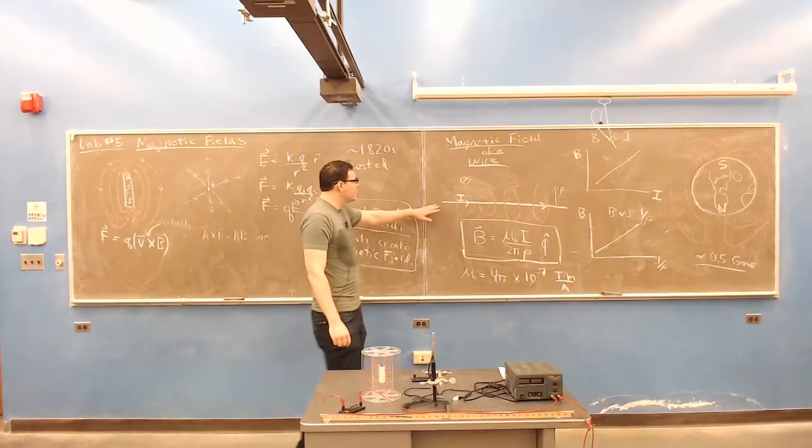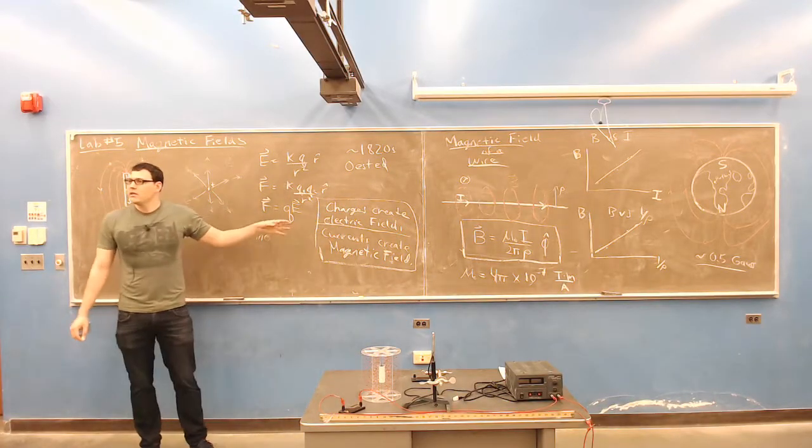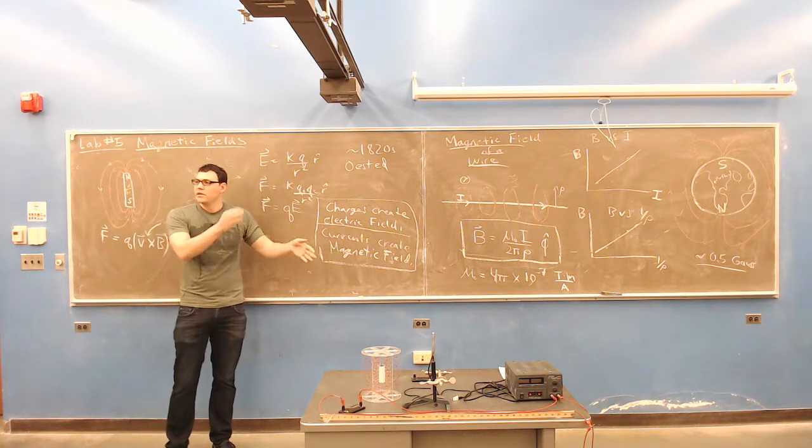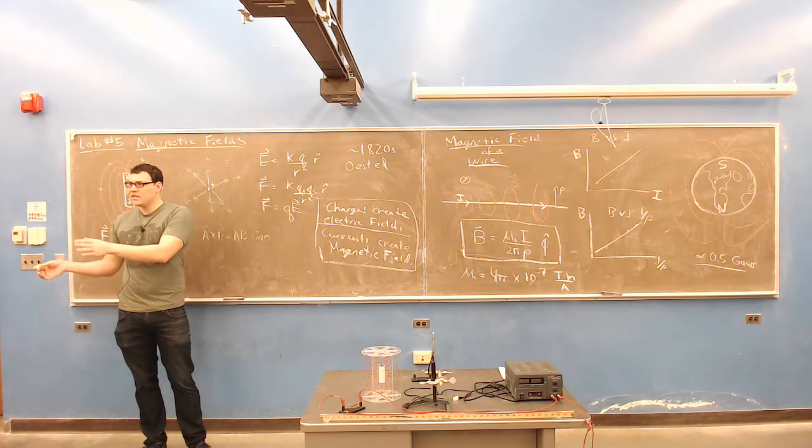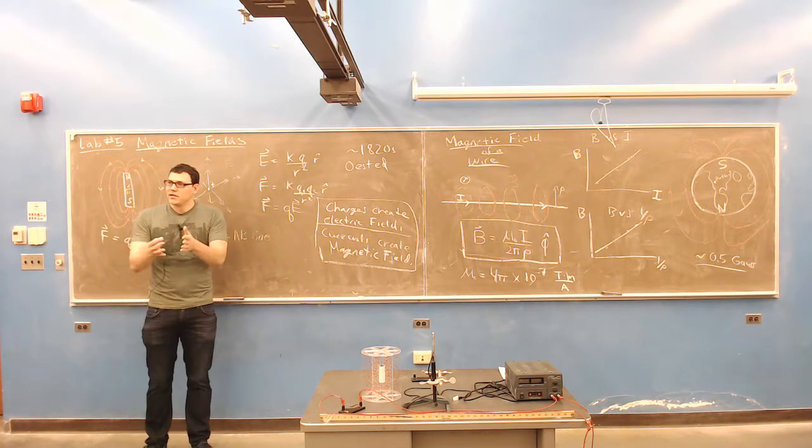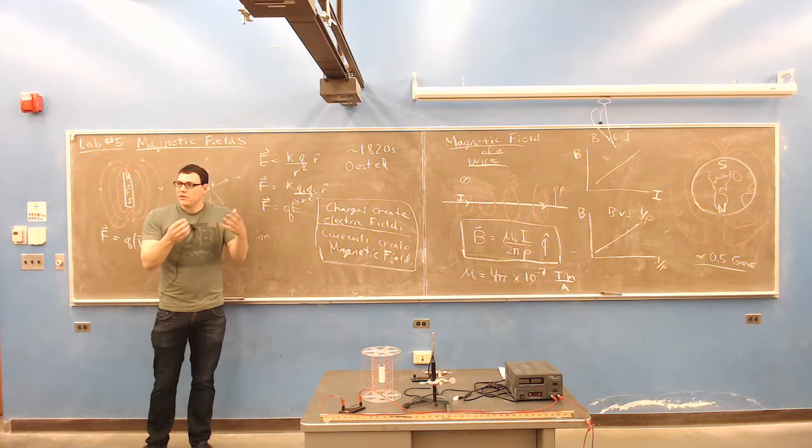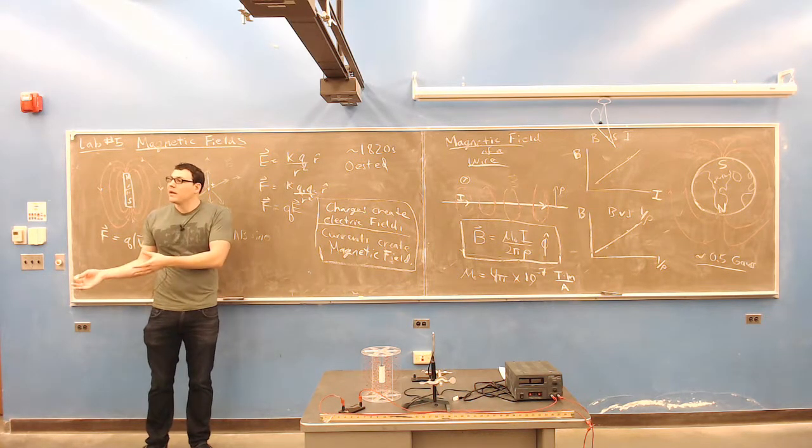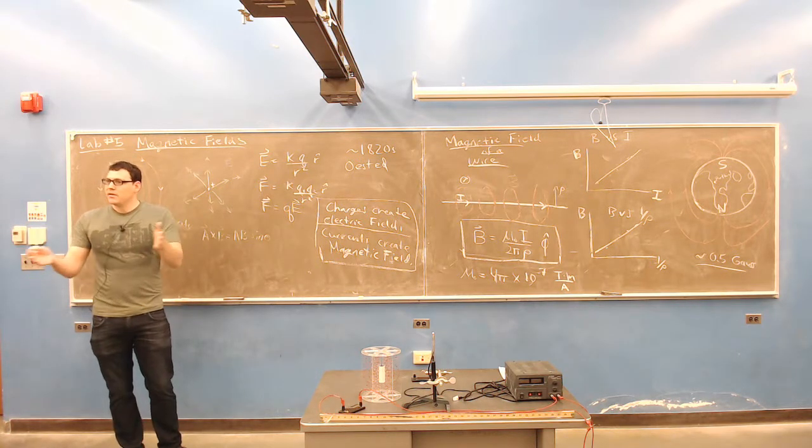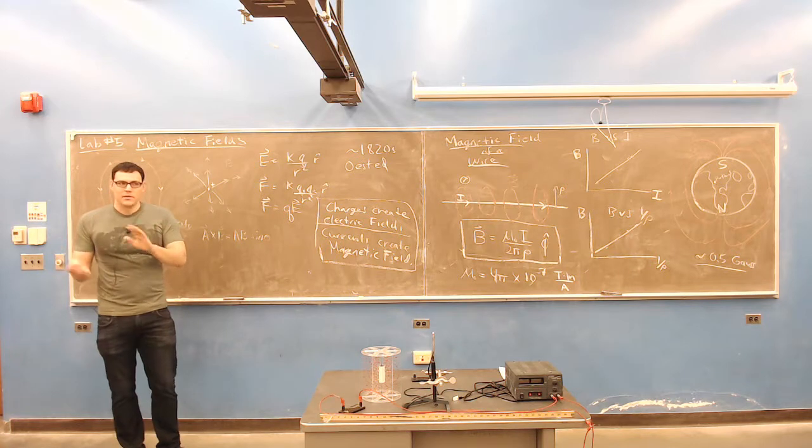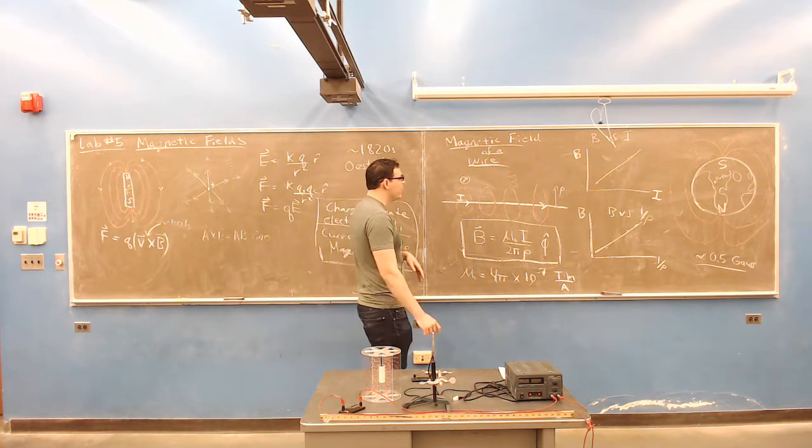And he was excited because this, before these were two different subjects. There was electricity and magnetism. And there were some scientists who were doing electric stuff. And there were some scientists doing magnetic stuff. And now they could connect them, right? It was, you know, charges, electric things create the magnetic things. And so now it became what we call E and M, electricity and magnetism. The two forces were combined.